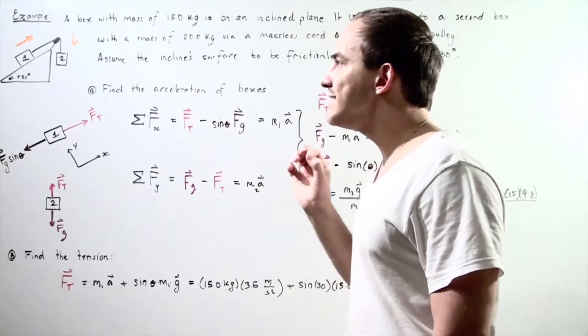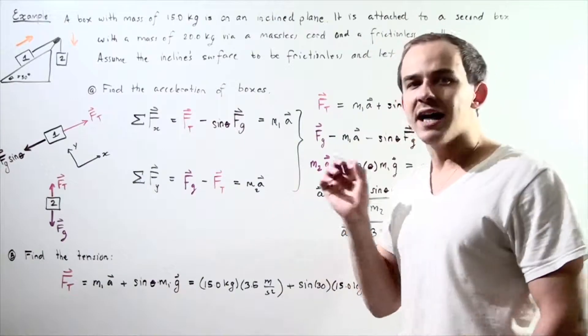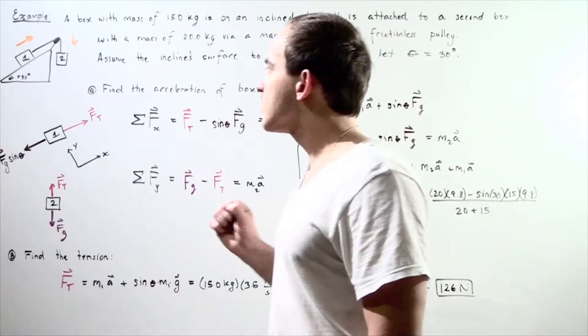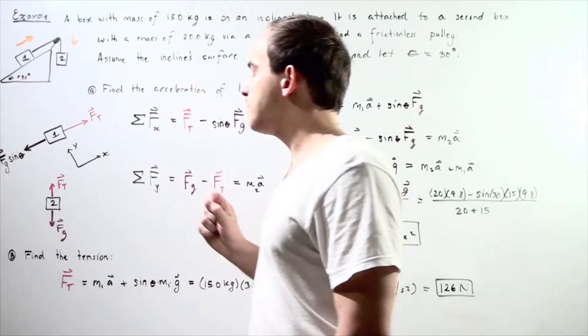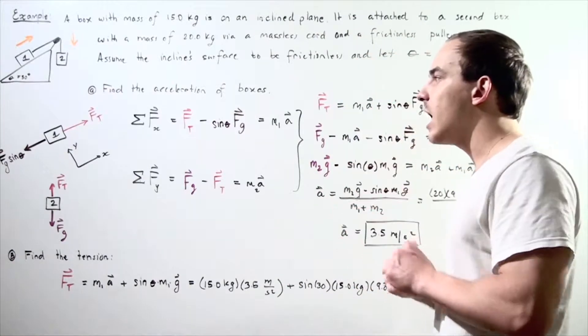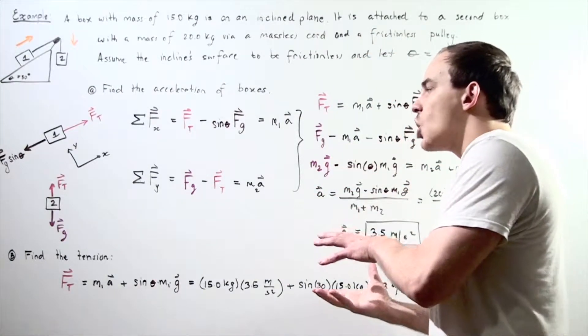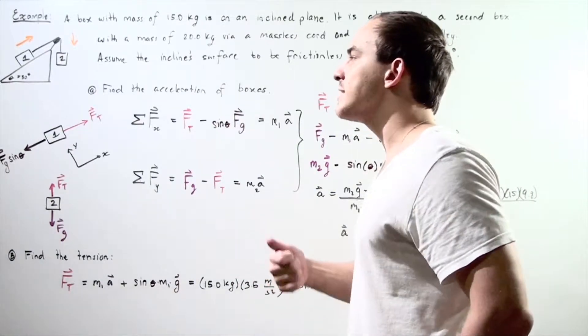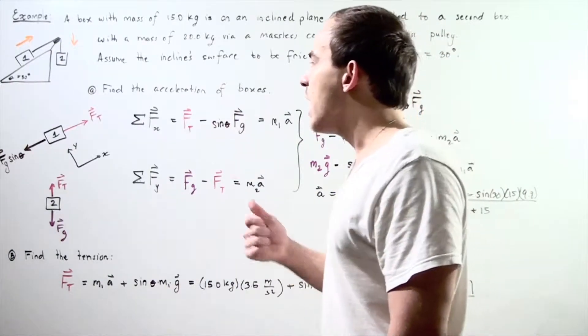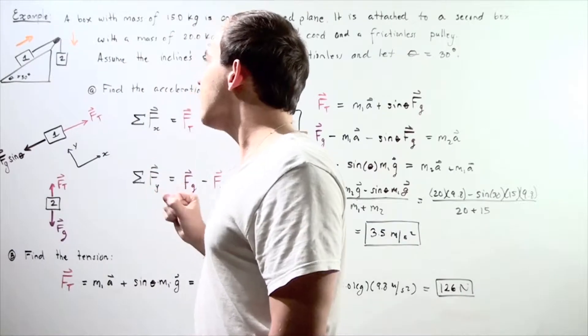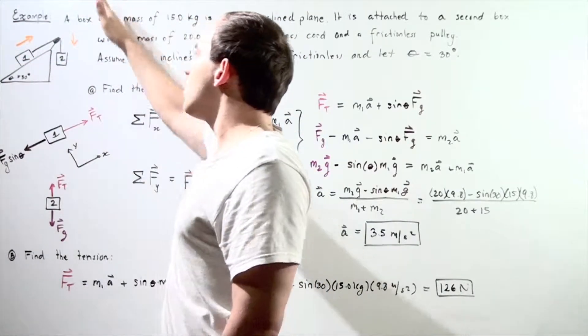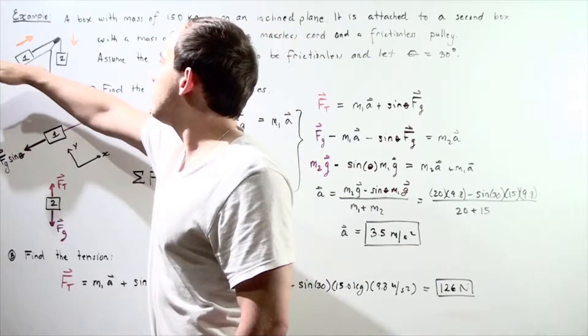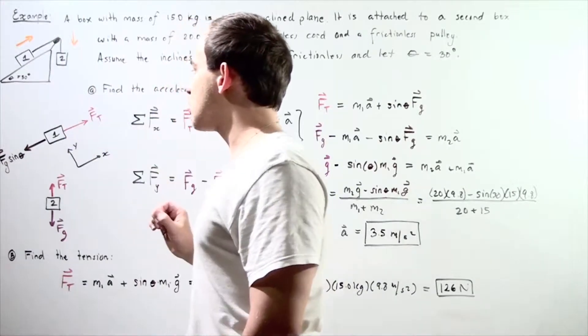We begin by examining the free body diagrams, the force diagrams for box A and box B. We're essentially setting up a system of equations with two unknowns and we want to solve for our acceleration unknown. Our system of boxes is going to move along this line, so it will move up and down.